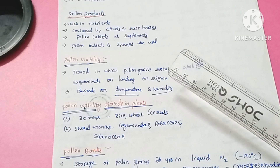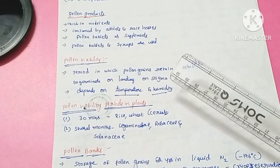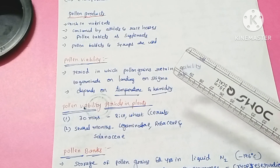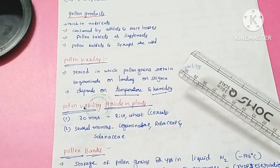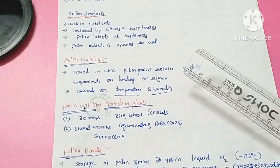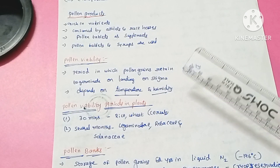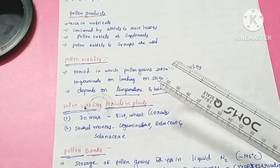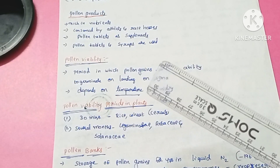Pollen grains are available in the form of pollen tablets and pollen syrups. In Western countries, these pollen tablets and pollen syrups are widely used.